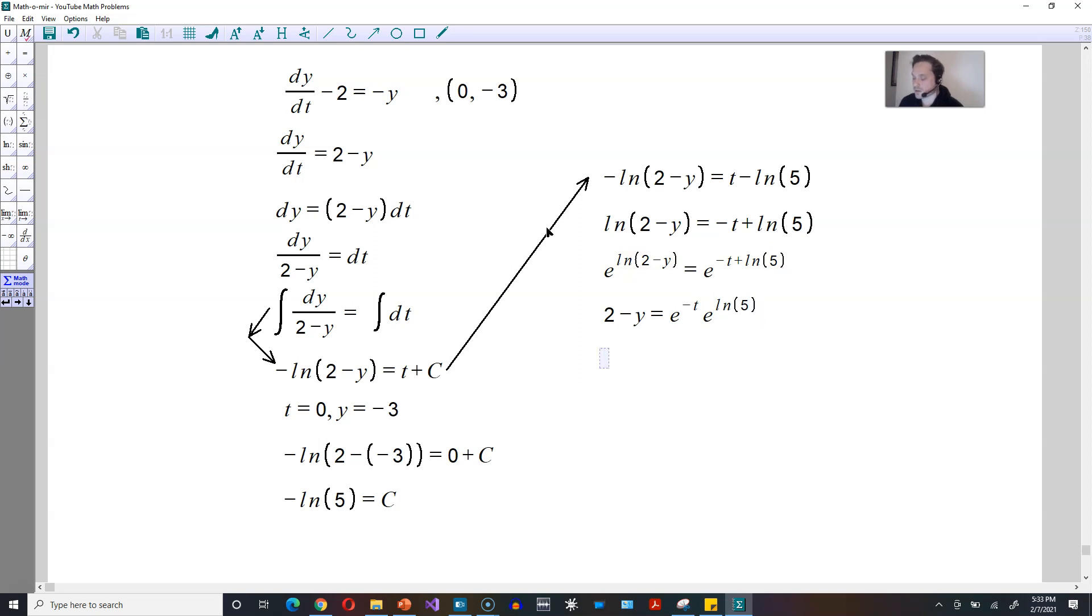e and ln are inverse functions, so it's going to be 2 - y is equal to e to the -t. Because e and ln are inverses, you can cancel them off, and you just end up with 5 in this position.